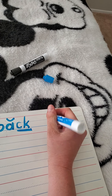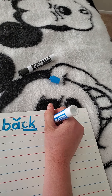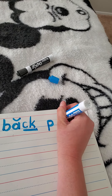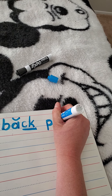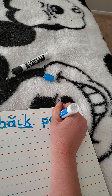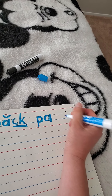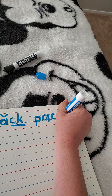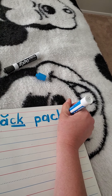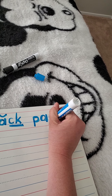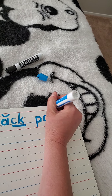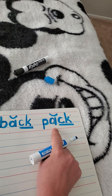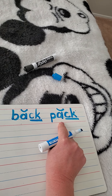Now I'm going to do pack — P, A, and do my C and my K. Now remember, underline the digraph, and we have to put that breve on top of our A.